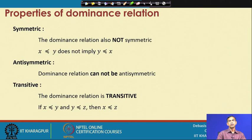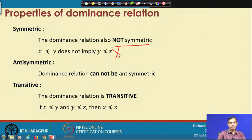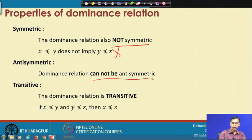Similarly, this relation is also not symmetric. That means if x dominates y, it does not imply that y dominates x. It can also be anti-symmetric — but domination does not satisfy anti-symmetry either, because if x and y do not dominate each other, y can also dominate x, so it cannot be anti-symmetric.